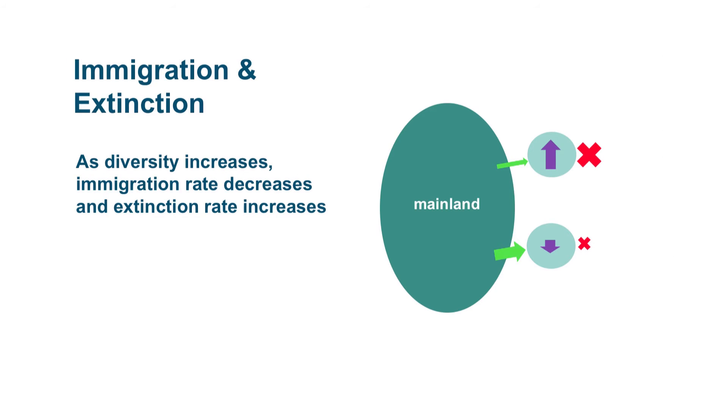Immigration and extinction are concepts where immigration is when species arrive on an island, and extinction is when they disappear permanently from an island.